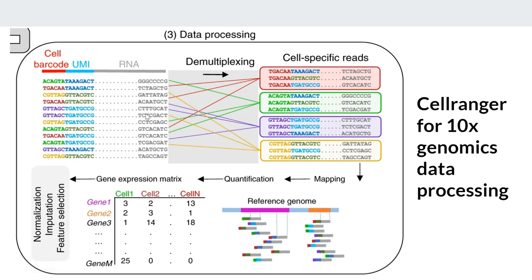The step from FASTQ to count matrix is performed by a tool called CellRanger, provided by 10x Genomics. CellRanger takes the raw FASTQ file, performs cell demultiplexing, UMI deduplication, alignment, and quantification, and outputs the count matrix. This output can then be fed into the Seurat package in R or the Scanpy package in Python for downstream data analysis.